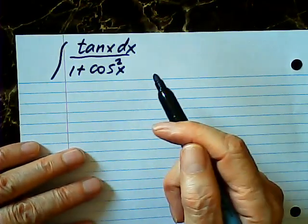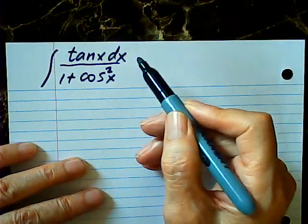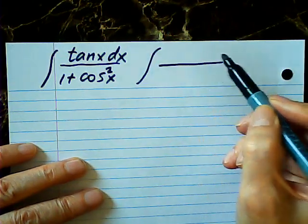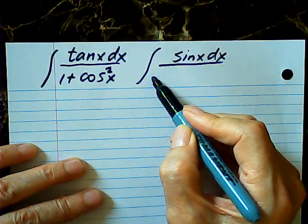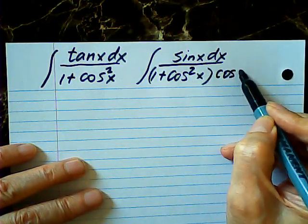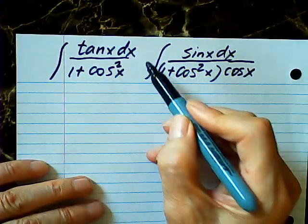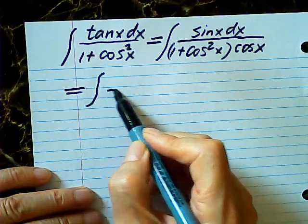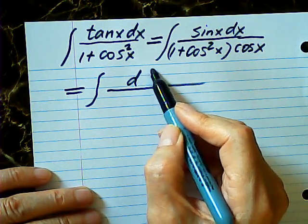Now, this integral — how do we start? This one is equal to sine x dx over 1 plus cosine squared x, multiplied by cosine x. I simply mean tangent x is sine over cosine, so they're equal, right?